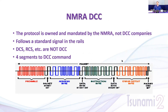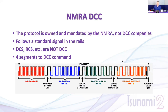First of all, NMRA DCC is a standard — the signal that is actually on the rails. Every DCC system has to create this signal, whether it's MRC, Digitrax, NCE, CVP, EZ DCC, or Bachmann. As long as it's following the NMRA DCC signal, the signal on the rail is standardized. Other brands like DCS or RCS are similar but are not DCC, so they won't work with a DCC decoder.